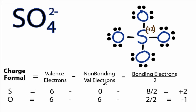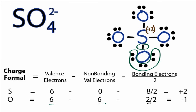For the oxygen, it's also in Group 6 or 16, so it has 6 valence electrons. Up here, non-bonding, we have 6, and then bonding, we have 2. And all these oxygens are the same, so we only need to do 1. So 6 minus 6 minus 2 gives us a minus 1 formal charge for each oxygen.